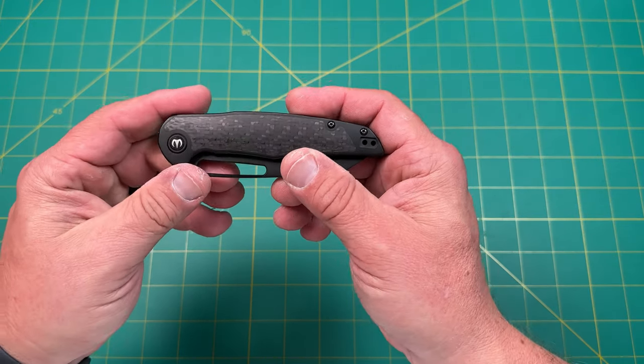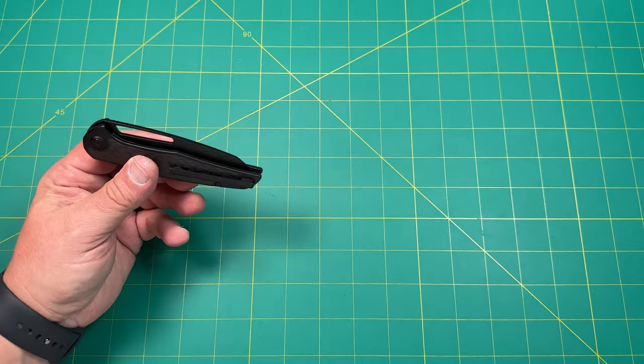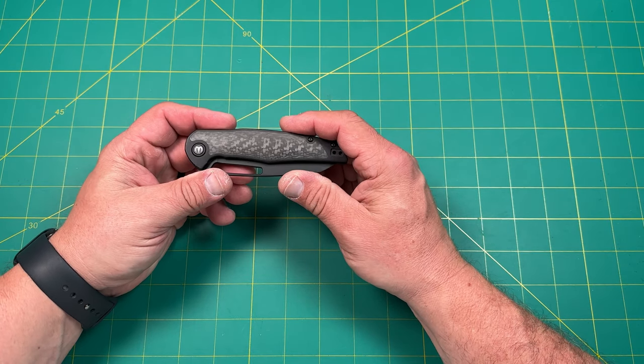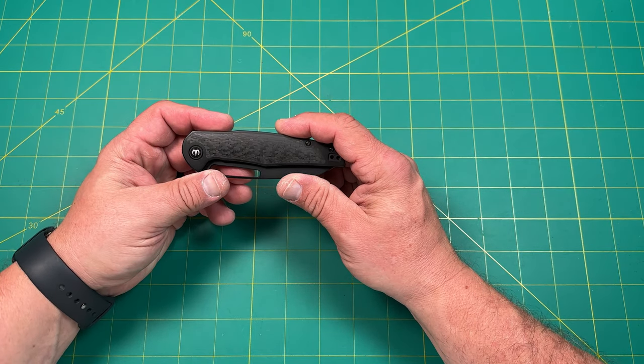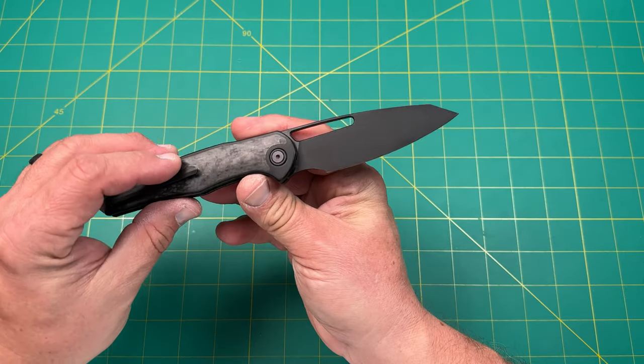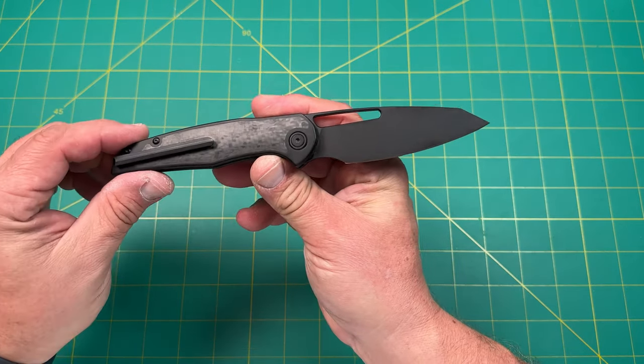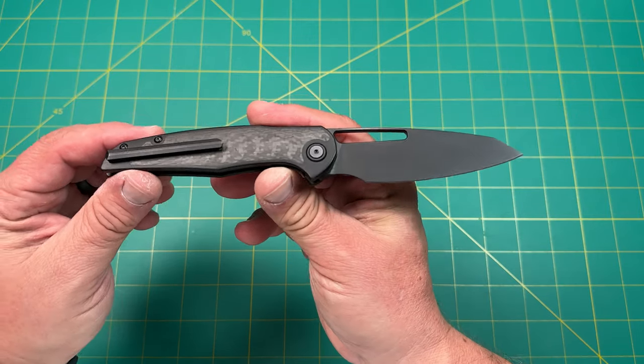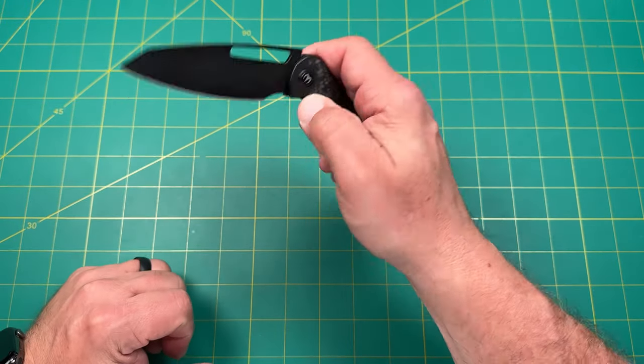This is the Mallory Designs Forus. I'm not sure if I'm pronouncing that correctly. It's P-H-O-R-U-S Forus. It's an S35VN blade steel, this particular one, but the actual production knife that they had for sale at White Mountain Knives, I think they're sold out there, but they still have some on sale at their website.